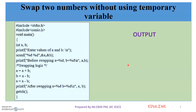In the previous video, we swapped values using temporary variables. Now, we will swap values without using a temporary variable.